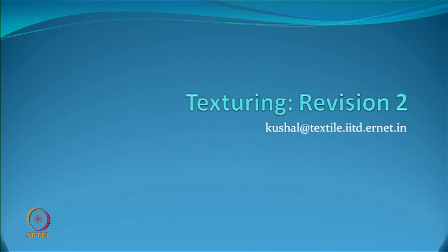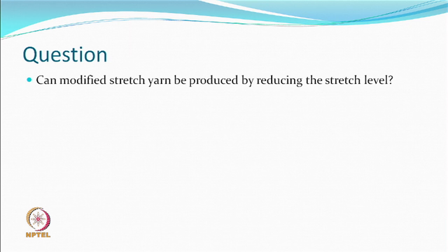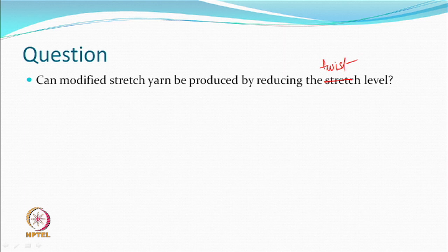This particular hour is going to be spent on a type of revision, based on some of the queries that were submitted. This question we had some time back answered, but it appears it came again: can the modified stretch yarn be produced by reducing the twist level? This we said is not a good idea, because we have a process of twisting and detwisting.